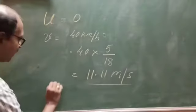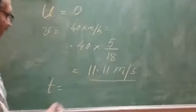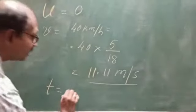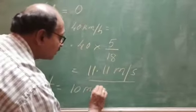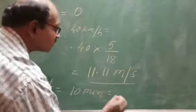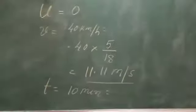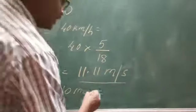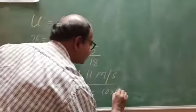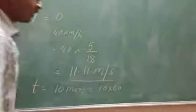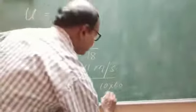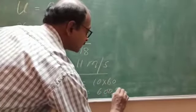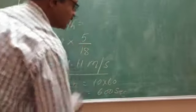Now the time is given. T is equal to 10 minutes. So 10 minutes is nothing but 10 into 60, which is equal to 600 seconds.